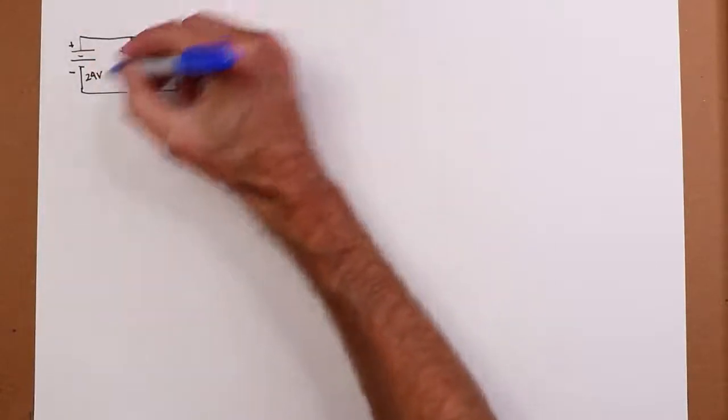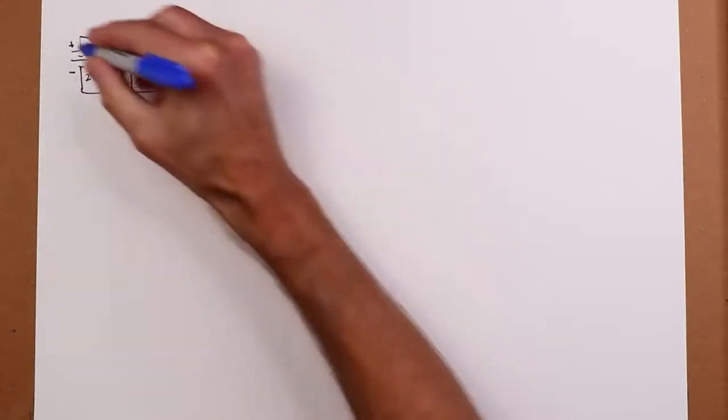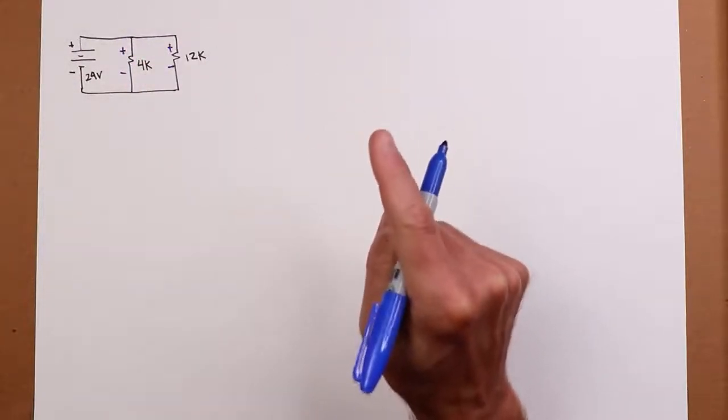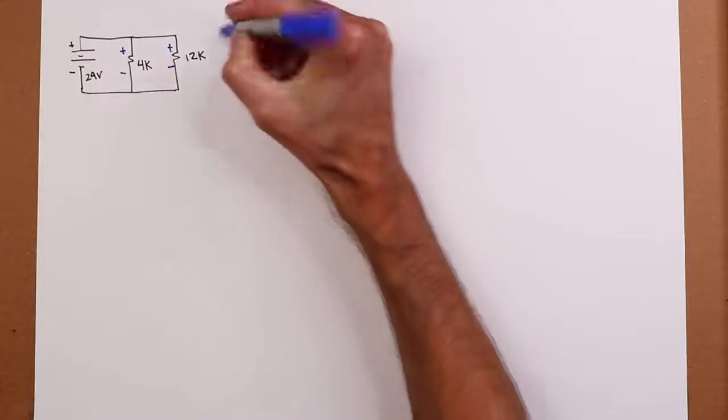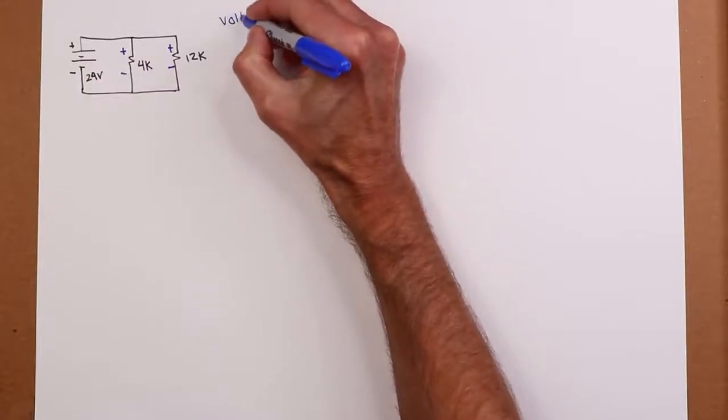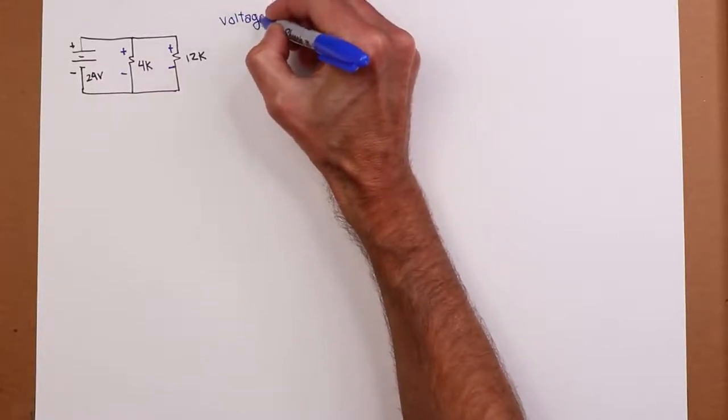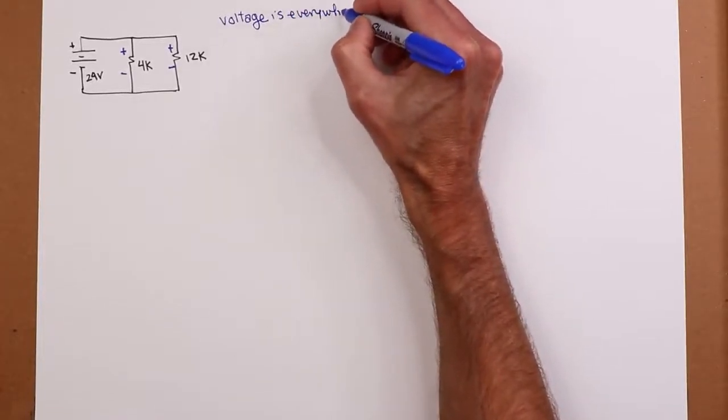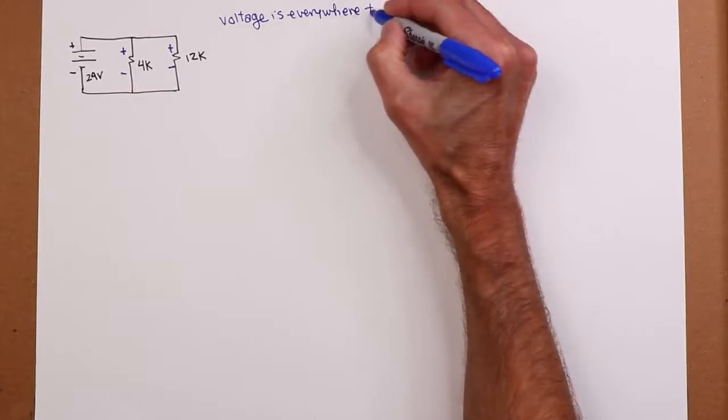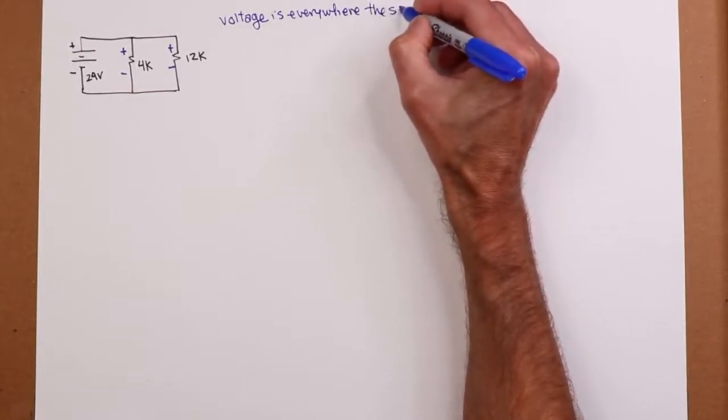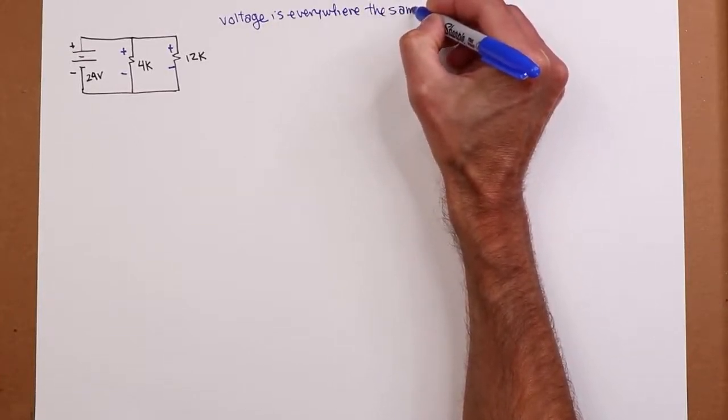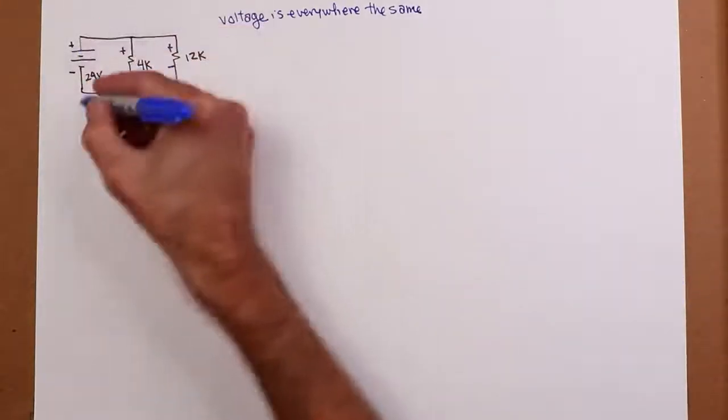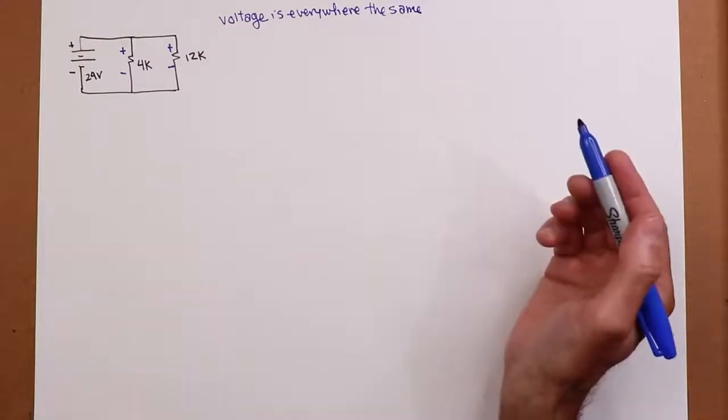So this plus to minus is the same as the drops on the two resistors, right? Remember this is ideal conductors, top and bottom. This point is this point is this point. So the key thing to remember here is in the parallel connection, voltage is the constant. Voltage is everywhere the same, everywhere, because you're only going to have two connection points when you get right down to it. You've got this top one, this bottom one.